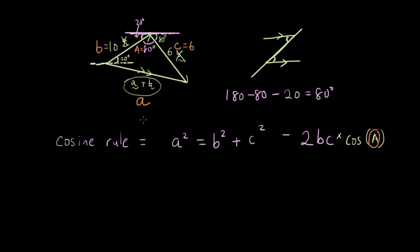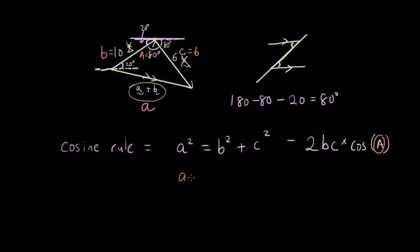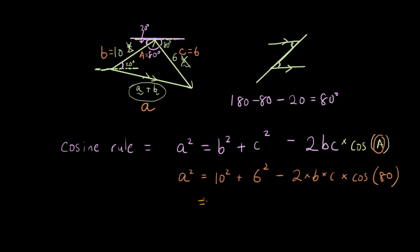So now that we have all the things we need. We can simply substitute them into the equation. So we have a squared equals b is 10, c is 6, minus 2 times b times c times cosine of 80. So cosine bracket 80 degrees. And now we can simply type this into the calculator. So make sure your calculator is on degrees mode. So it says DEG because we're working in degrees right now.